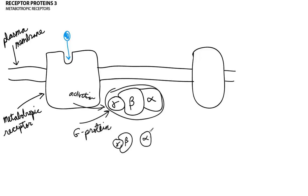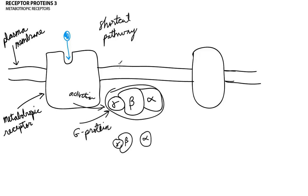There are two different ways that an activated alpha subunit can affect the internal chemistry of the neuron. One of those ways is known as the shortcut pathway. This pathway is not terribly different from ionotropic receptors. The big difference is you don't get a channel through the metabotropic receptor itself. Rather, you activate the G-protein, and then the activated G-protein can come over and affect an ion channel that's already embedded in the plasma membrane.